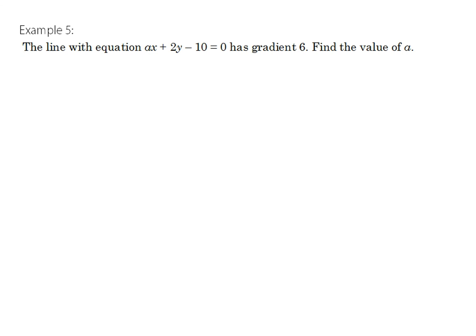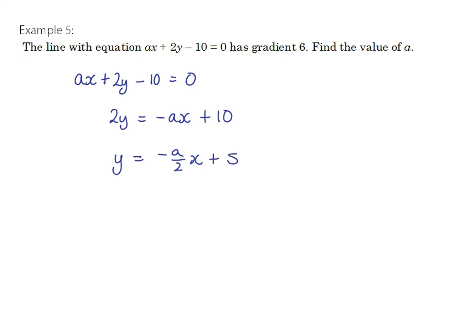Since the equation is in general form, which doesn't reveal the gradient directly, we convert to gradient-intercept form by making y the subject: subtract ax and add 10 to both sides, then divide everything by 2, giving y equals negative a over 2 times x plus 5. The coefficient of x gives the gradient, so negative a over 2 equals 6. Multiplying both sides by negative 2 gives a equals negative 12.